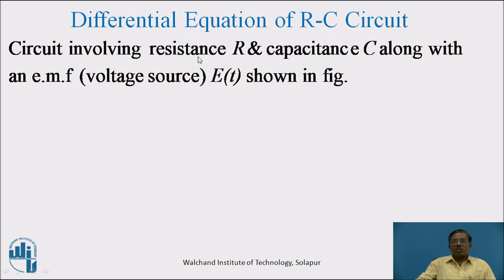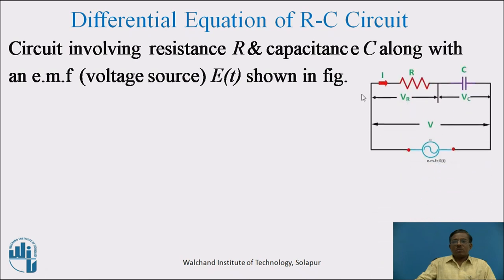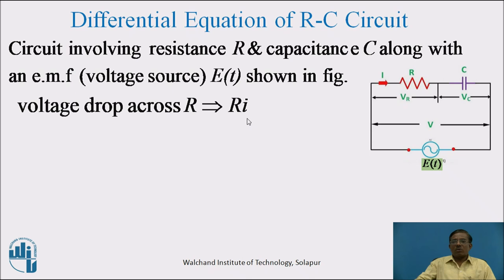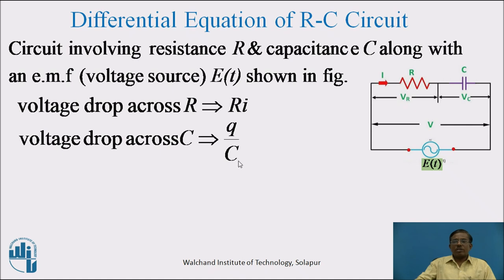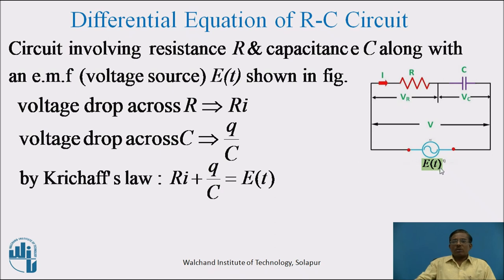Similarly, for the RC circuit — a circuit involving resistance R and capacitance C along with an electromotive force E(t) in series — Vr is the voltage drop across resistance, equal to R·I, and V_C is the voltage drop across capacitance C, equal to Q/C. By Kirchhoff's Voltage Law, the sum of voltage drops across resistance R and capacitance C equals the total electromotive force applied to the circuit. Therefore, the differential equation of this RC circuit is: R·I + Q/C = E(t).